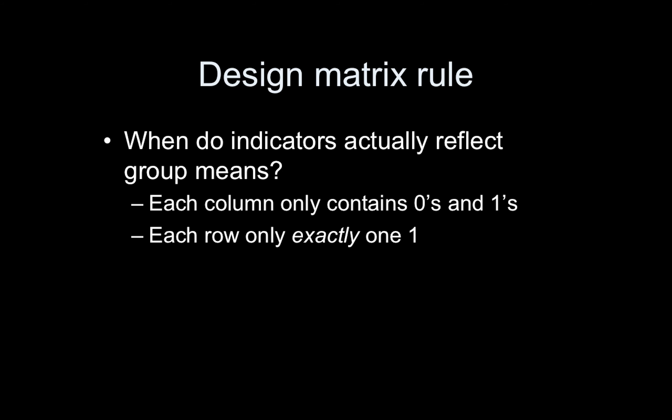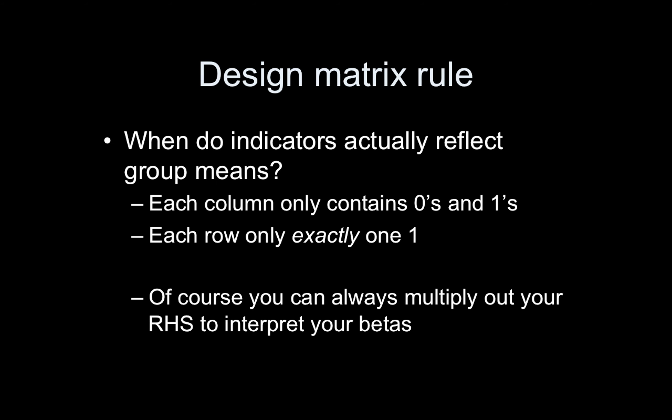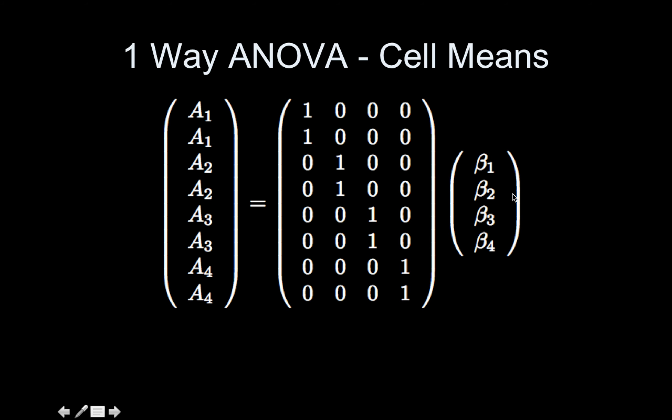I talked about this last time, but I just want to review it. When do indicator variables actually reflect group means? Indicator regressors are just regressors that have ones and zeros only. If these two rules hold, then you can conclude that each regressor is modeling a mean of a group. The first is that each column contains only zeros and ones. The second rule is that each row contains exactly one one. You can just multiply out the right-hand side, the design matrix times the beta vector, and use that to interpret your betas.